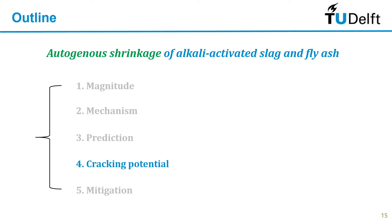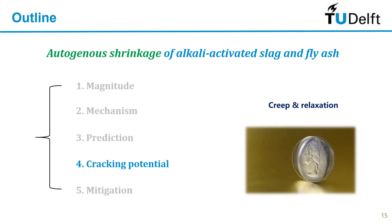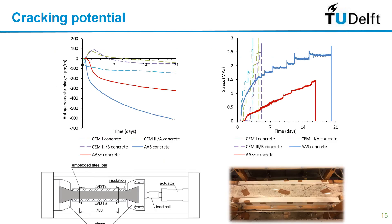We talked about free shrinkage and prediction, and now we need to talk about the cracking potential. From the mechanism part we know that a large part of the shrinkage of alkali-activated paste is creep. If the material is under a restraining condition there should therefore be large stress relaxation, because creep and relaxation are just two sides of one coin — both reflect the viscoelasticity of the material. Indeed, we found that the stress in alkali-activated materials is even lower than the stress in restrained Portland cement concrete with similar strengths; the stress rate decreases with time and cracking occurs even later than in Portland cement concrete.